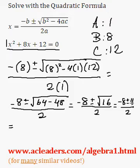Negative 8 plus 4, over 2. Plus 4, over 2. As well as, negative 8 minus 4, over 2.